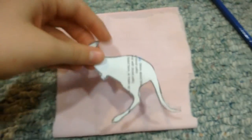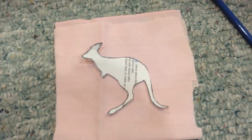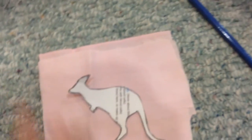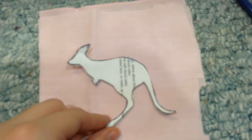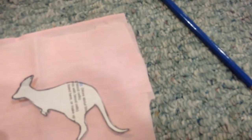I printed out this little kangaroo stencil I'm going to be using to make my kangaroos on the pillow. Now all I'm going to do is trace it out with my pencil, and then we can get into painting it. So I finished sketching it on.